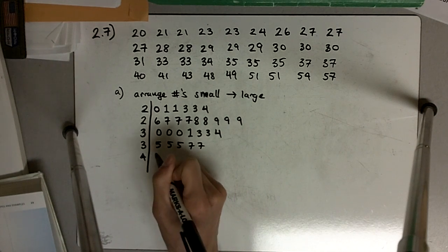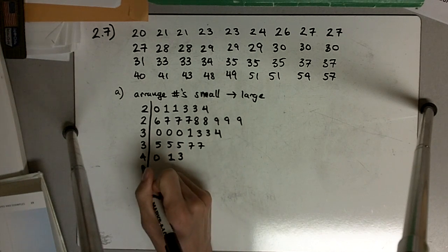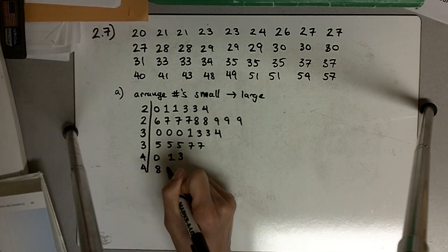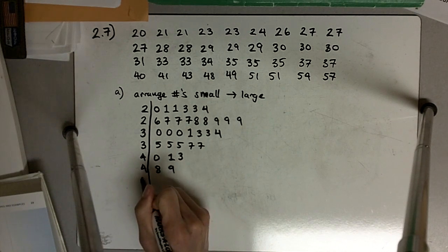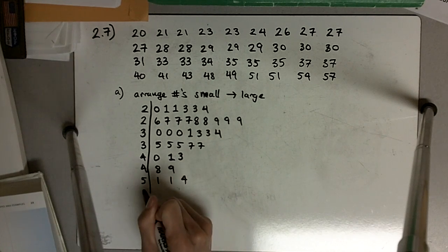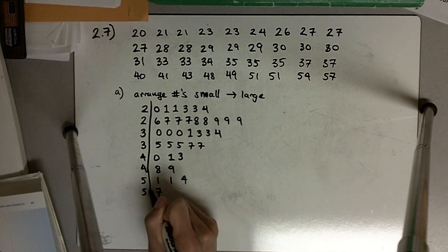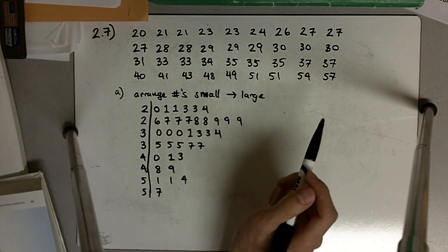40s, we'll have 40, 41, 43, and then there's 48, 49. We'll have to continue this down here: 51, 51, 54, and finally 57.